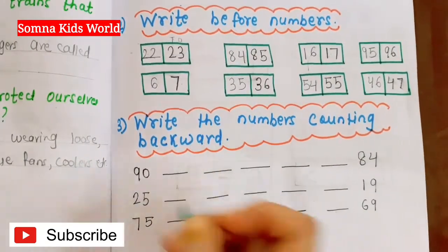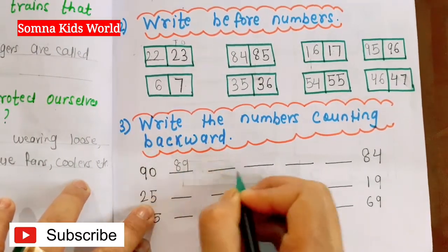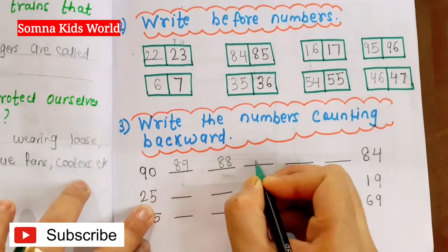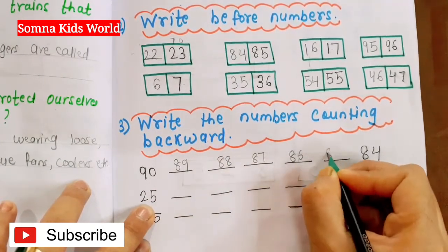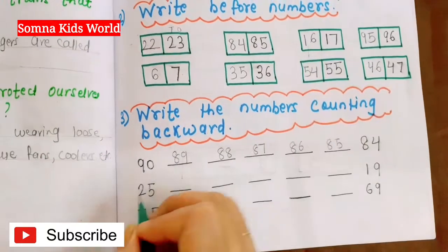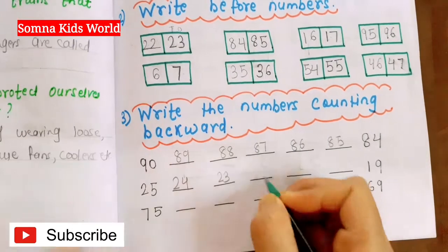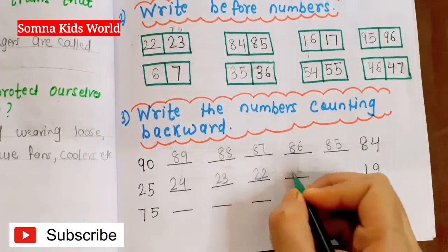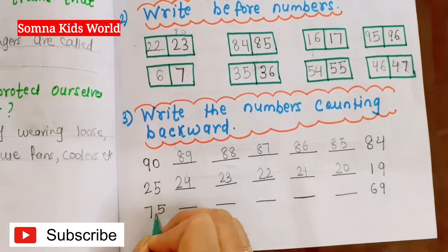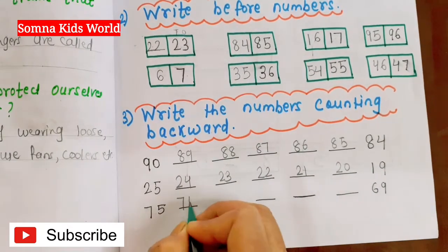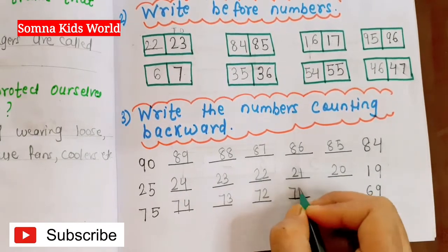Next, 'write the numbers counting backward.' So you write backward: 90, 89, 88, 87, 86, 85; then 25, 24, 23, 22, 21, 20; and 75, 74, 73, 72, 71.